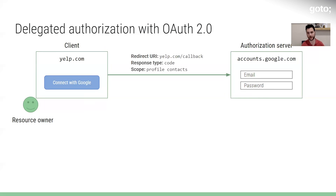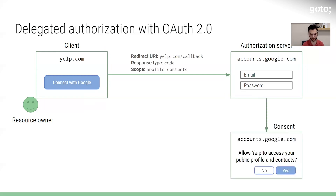The other really important parameter is what's called scope. Scope is a space-delimited list of names or strings that specifically identify what the client is asking for permission to do — for example, 'profile contacts.' Those names are defined by the authorization server, so if you were coding Yelp, you'd have to look up Google's authorization server documentation to see what scopes are available. Facebook's authorization server has different scopes, like asking permission to post on the wall. The authorization server uses those scopes to drive the consent screen shown to the user.